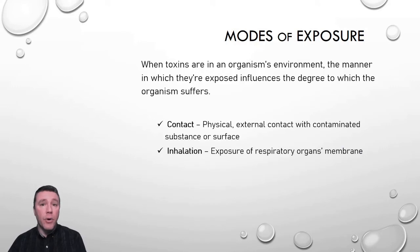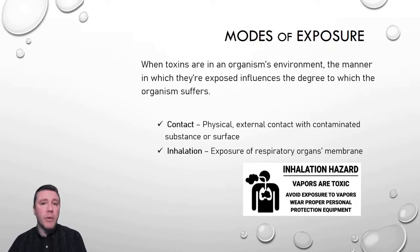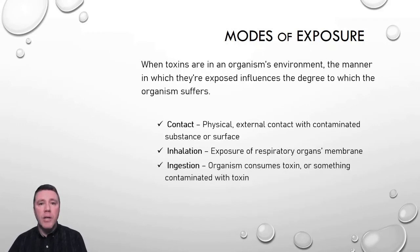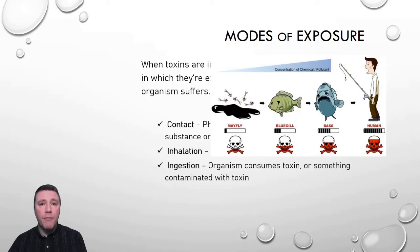Inhalation occurs when an organism breathes in a toxic substance. Examples include harmful irritants such as particulates and VOCs, as well as exposure to aerosolized heavy metals like lead, and fibrous minerals like asbestos. But all else being equal, ingestion is generally the most dangerous manner in which organisms are exposed to toxins. When an organism consumes something contaminated with a toxin, it can bioaccumulate in its own body if the rate of ingestion is greater than the rate of removal. When subsequent organisms in a food web consume them, the toxin biomagnifies at progressively higher concentrations at higher trophic levels.